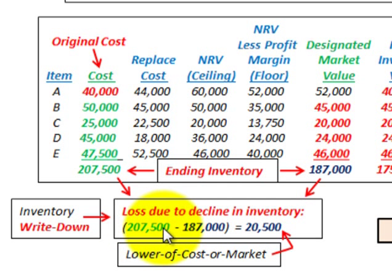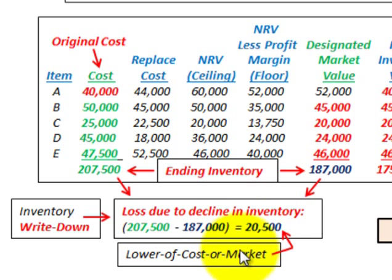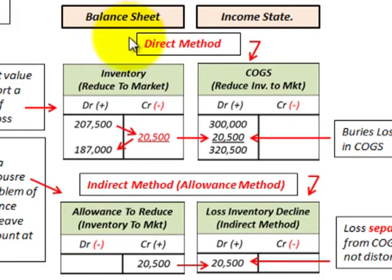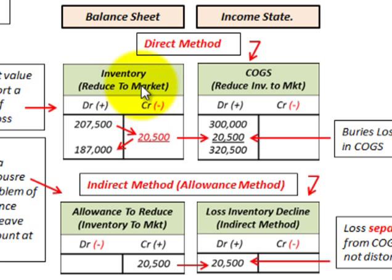The cost was $207,500 and the market value is $187,000, giving us a difference of $20,500. Using the lower of cost or market method, we're going to write down this inventory by $20,500. We'll look at two methods — the direct method and the indirect or allowance method — and how we set up our accounts for writing down this inventory and how it affects our balance sheet and income statement accounts.